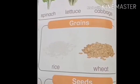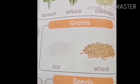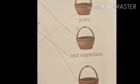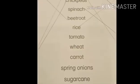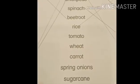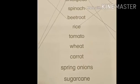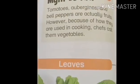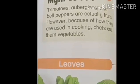Next one is rice. On page number 26 we see that rice and wheat are grains, so we will match rice with the grains basket. Next one is tomato — what do you think, is it a fruit or is it a vegetable?